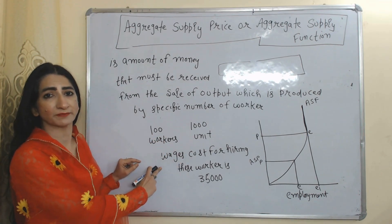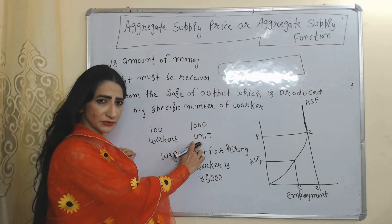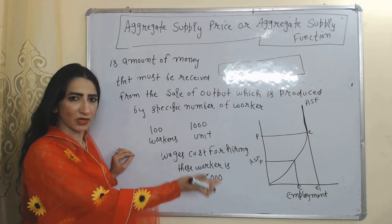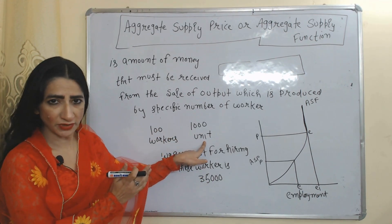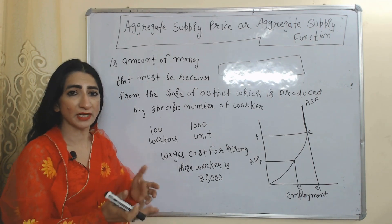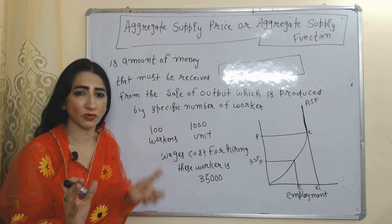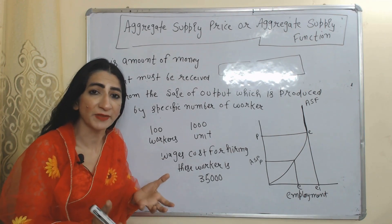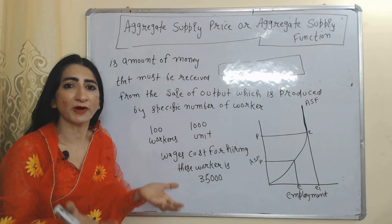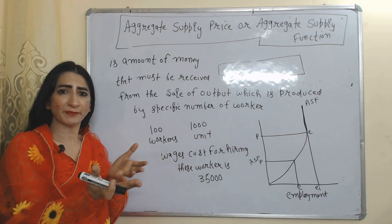For example, there are 100 workers producing 1,000 units, and the wages cost of these 100 workers is equal to 35,000. From the sale of 1,000 units, the firm must receive 35,000; otherwise, it will not be able to cover its wages cost. So aggregate supply price is the total amount of money a firm must receive from the sale of output produced by a specific number of workers.